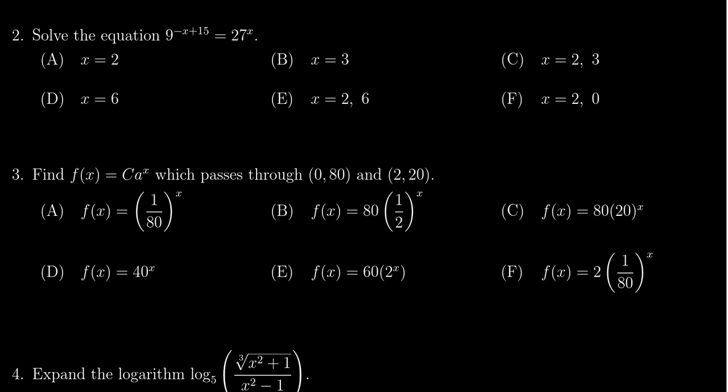So using some exponential laws, we can make life a lot easier for us. On the left-hand side, we have 3 squared, because that's 9, to the negative x plus 15. And so as you have an exponent now raised to an exponent, we can multiply them together. And the left-hand side becomes 3 to the negative 2x plus 30 power.